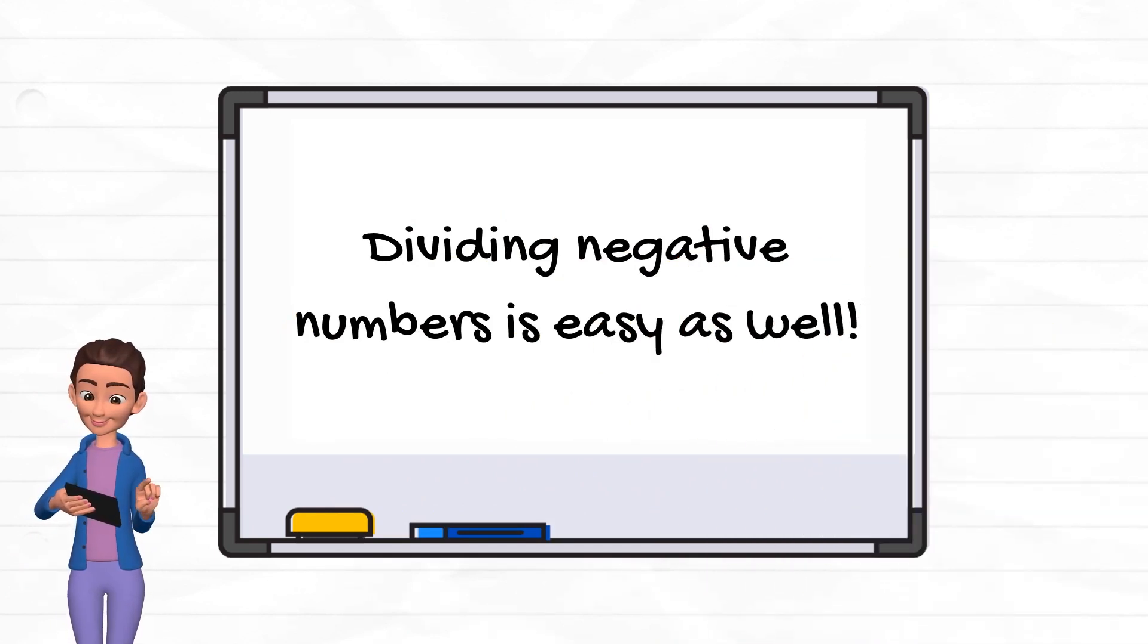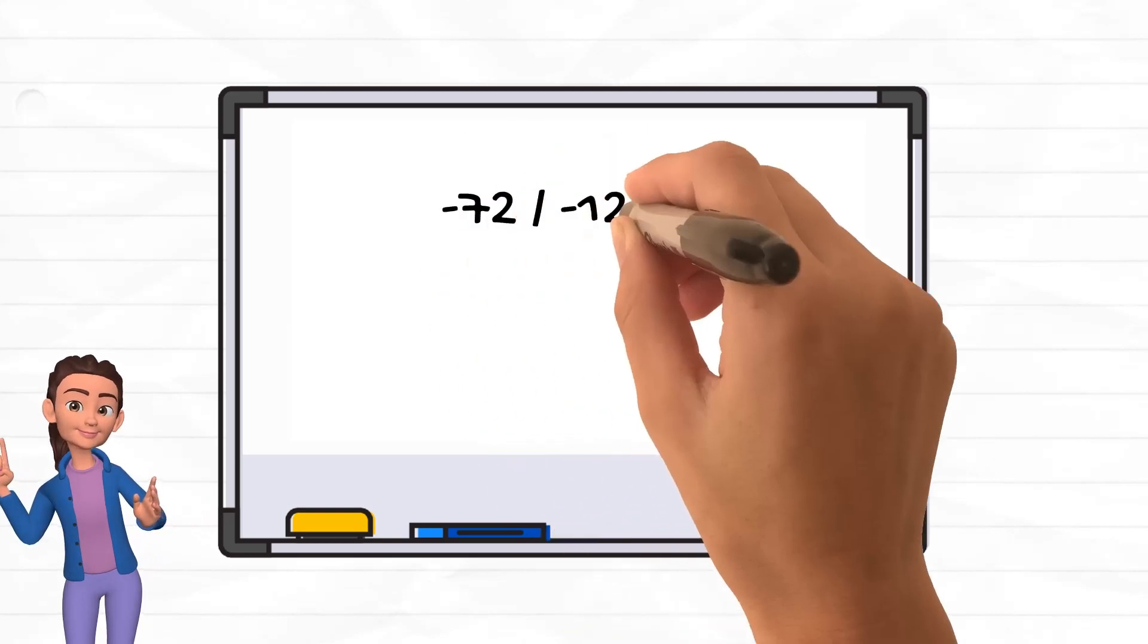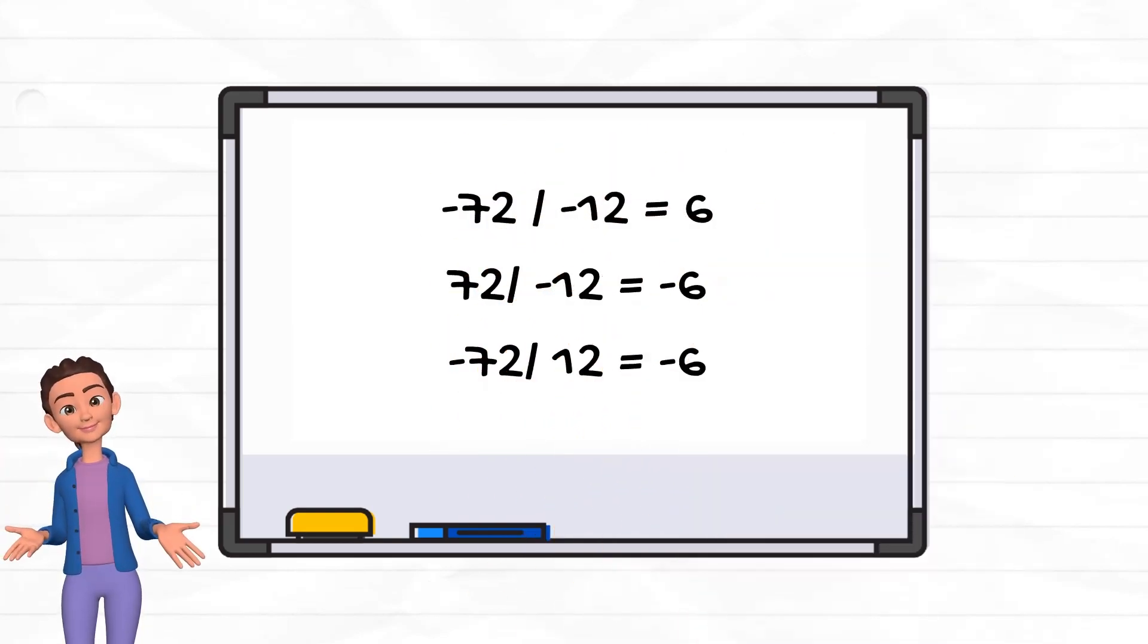Learning to divide negative numbers is simple. If both are negative, your answer is going to be positive. If one of them is negative, your answer will be negative.